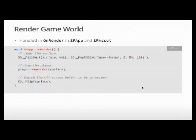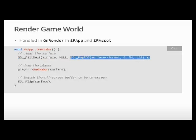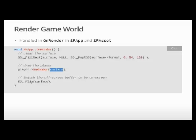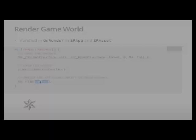Looking inside the Render method, it's very straightforward. We fill the surface — the background — with a single RGB color: three magic numbers I've picked to represent a nice blue color. Then we draw the player by passing the surface to the SF asset object called Player, and it draws itself onto that surface. Then we flip the surfaces — we flip the off-screen buffer to be on-screen. And that's it.